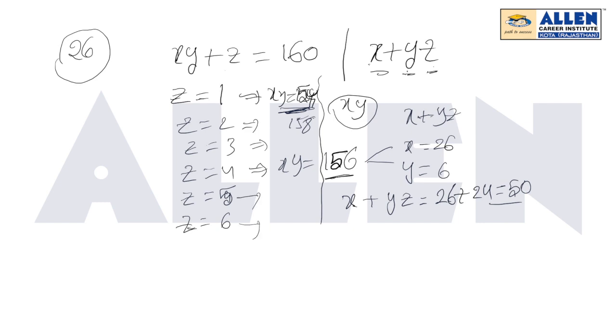In all remaining cases with z equals 5 and 6, always factorize xy. The different possible values of x and y always give you this x plus yz value. In all other cases more than 50. So our answer will be x plus yz equals 50 only.